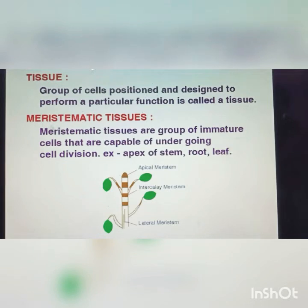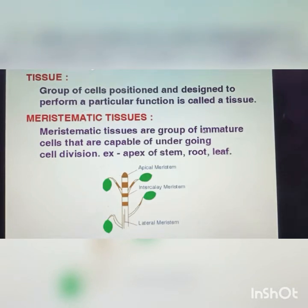First is meristematic tissue. Meristematic tissues are a group of immature cells that are capable of undergoing cell division. Meristematic tissues contain immature cells — cells that have not yet matured. This is found at the tip of the stem and tip of the root. They are capable of undergoing mitotic cell division.